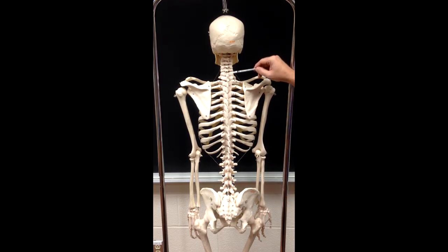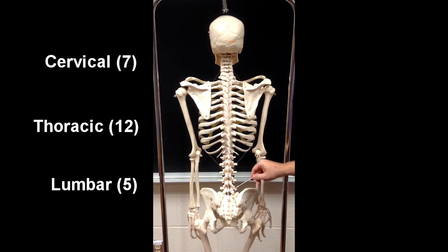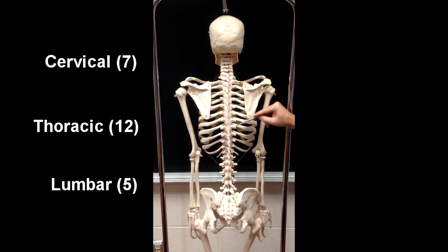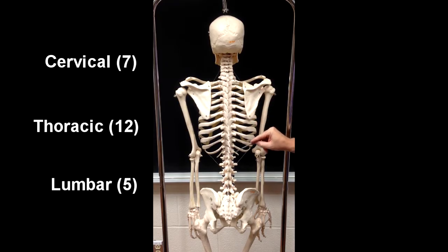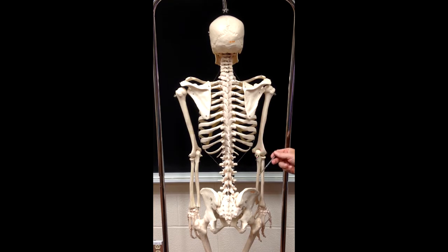So we have the cervical region, thoracic region, and lumbar region. The cervical spine has 7 vertebrae — you eat breakfast at 7. The thoracic spine has 12 vertebrae — you eat lunch at 12. And the lumbar spine has 5 vertebrae — you eat dinner at 5. That's one way to remember that.